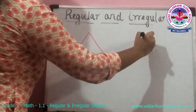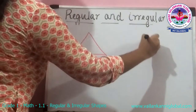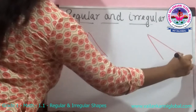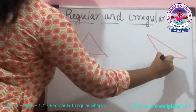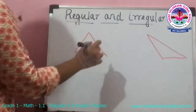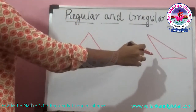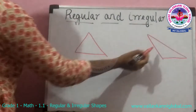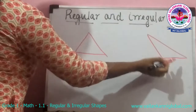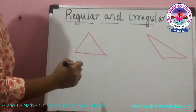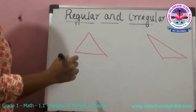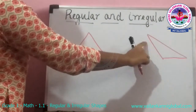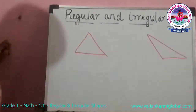So you can call that as a regular triangle. Whereas, when I draw something like this, it is still a triangle because it has three sides, but all these three sides are not equal. So this is an irregular triangle — it is an irregular shape.